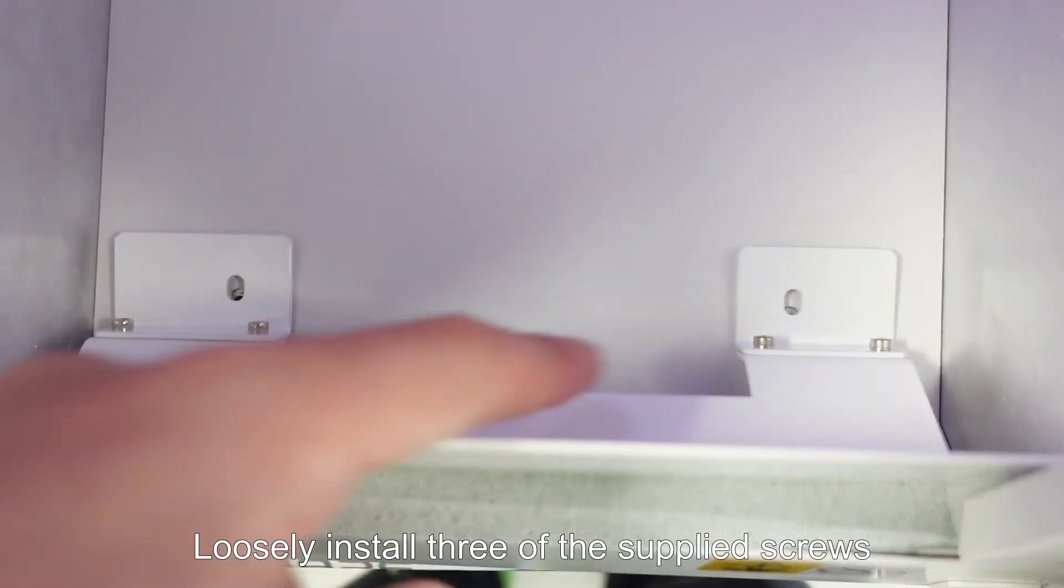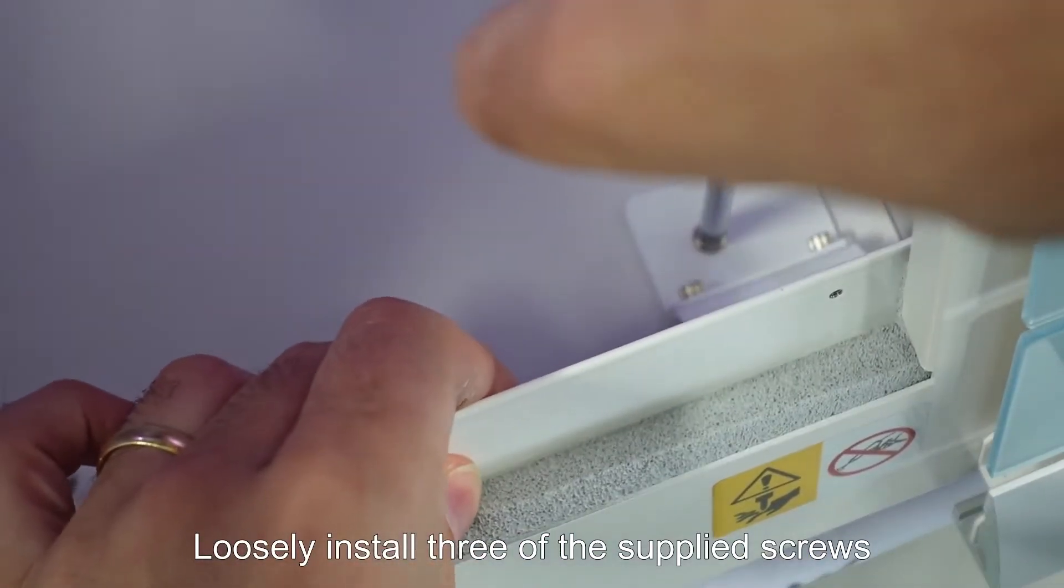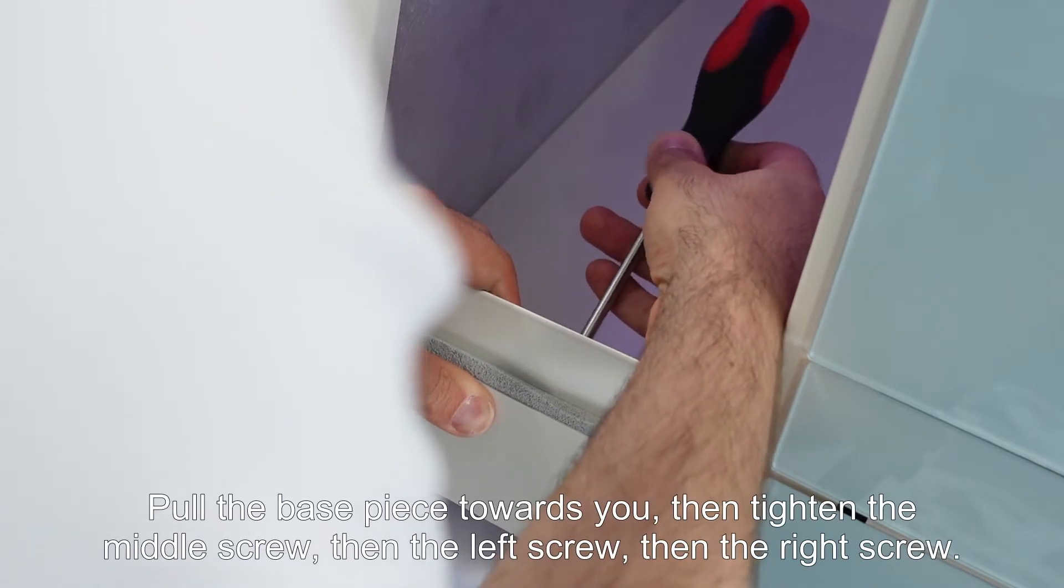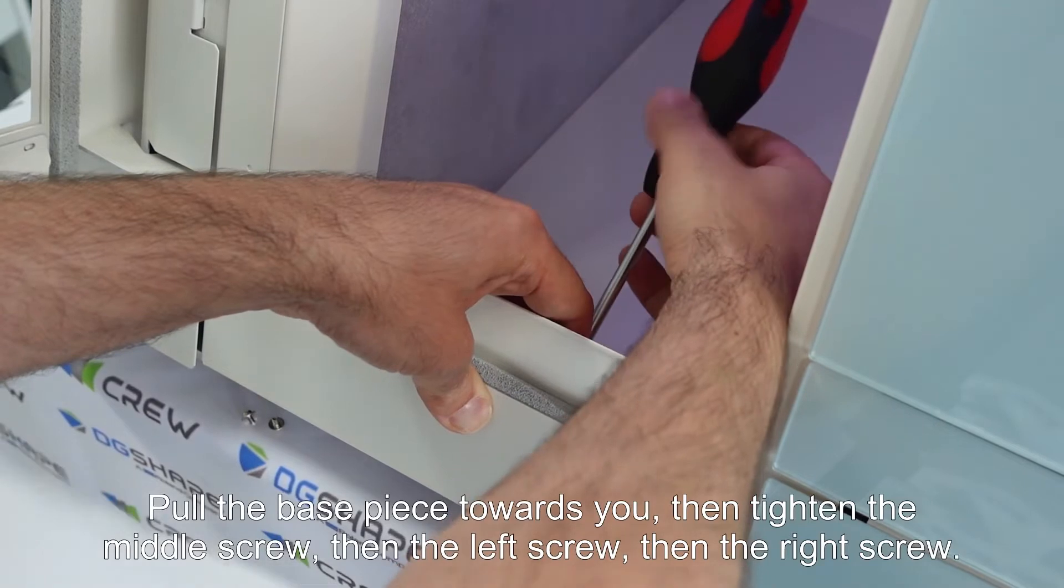Loosely install three of the supplied screws. Pull the base piece towards you, tighten the middle screw, then the left screw, then the right screw.